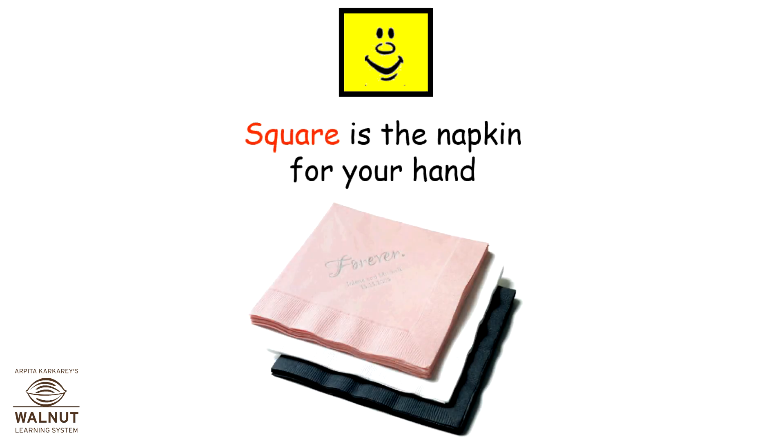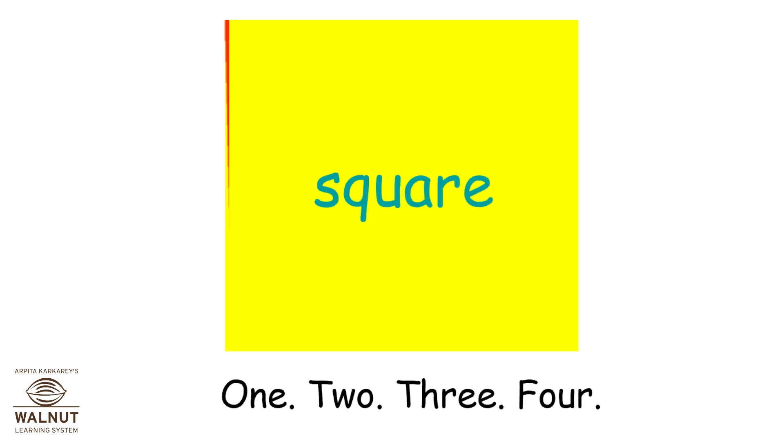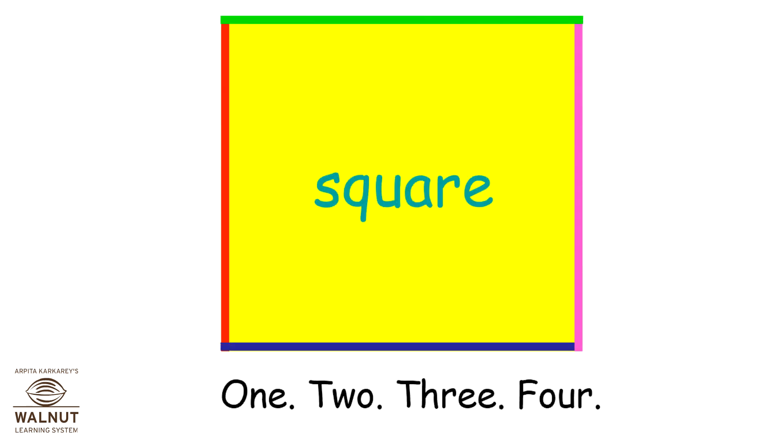Square is the napkin for your hand. Square is the tile on which you stand. One, two, three, four.